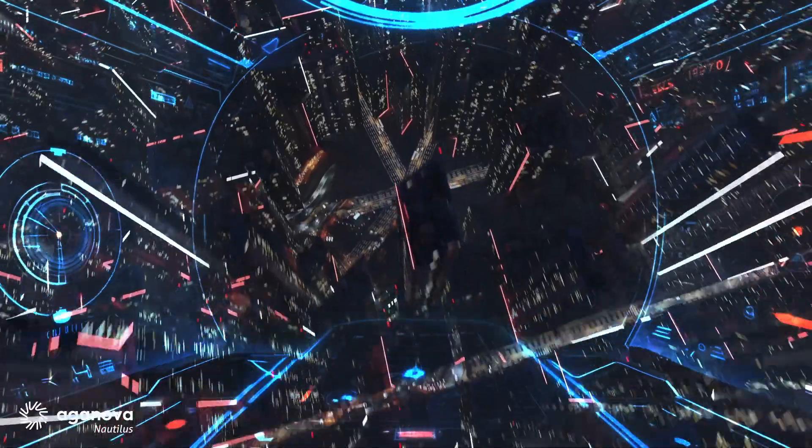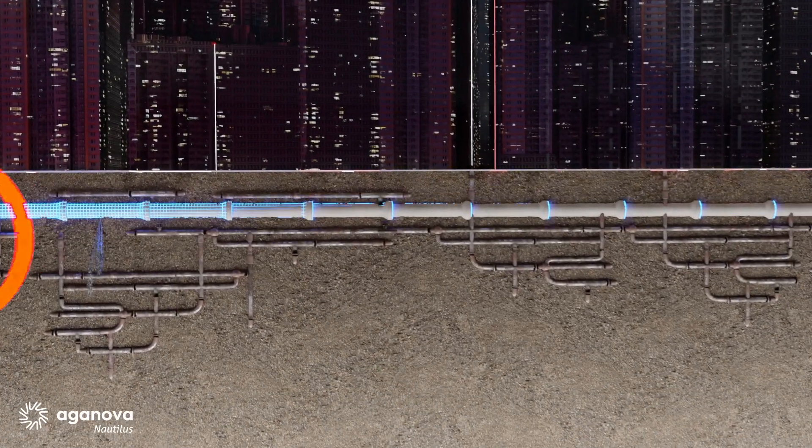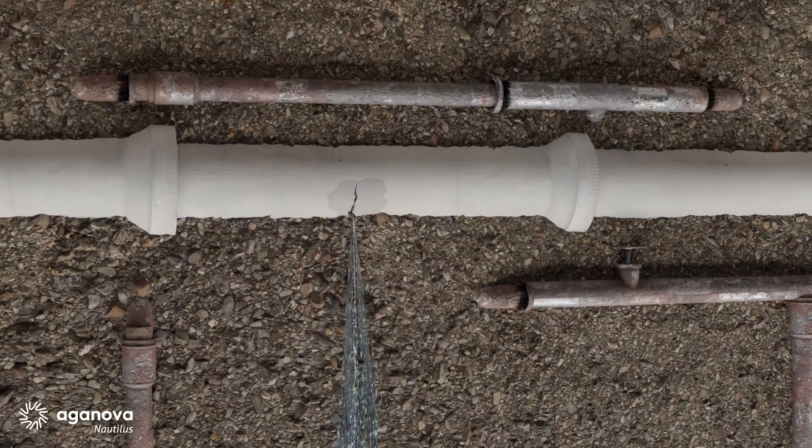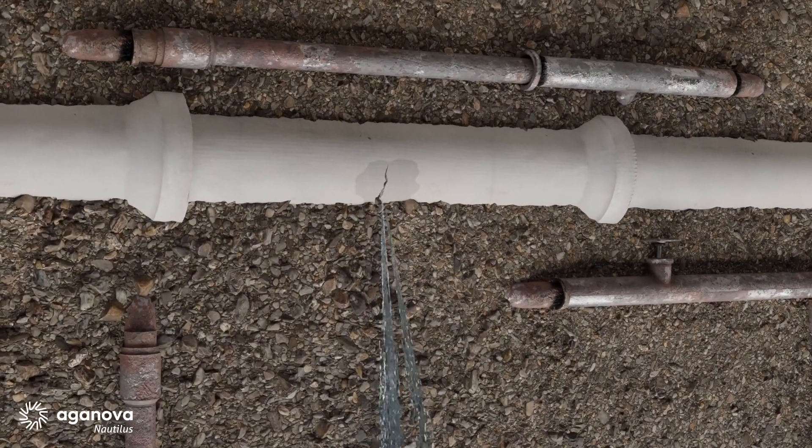Every day, millions of litres of water are lost due to undetected leaks in underground pipelines. Finding these leaks with precision is key to reducing costs and improving efficiency.